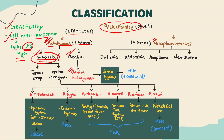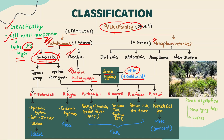Under the genus Orientia, the species Orientia tsutsugamushi is the one which causes Scrub Typhus. The vector involved is the trombiculid mite. The name 'scrub' comes from scrub vegetation — areas with low-lying trees and bushes — where the incidence of Scrub Typhus is high, hence the name.